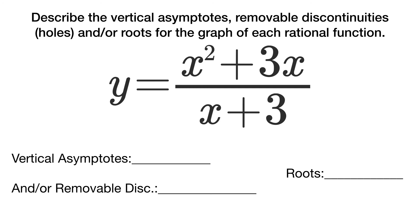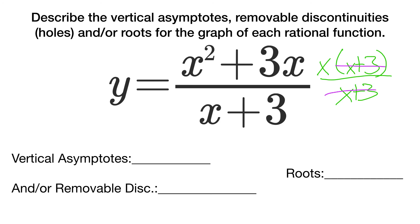For the final example: x squared plus 3x factors as x times x plus 3, all over x plus 3. The x plus 3 cancels, giving a removable discontinuity at x equals negative 3. There are no other denominator factors, so no vertical asymptotes. The remaining x in the numerator gives a root at x equals 0.